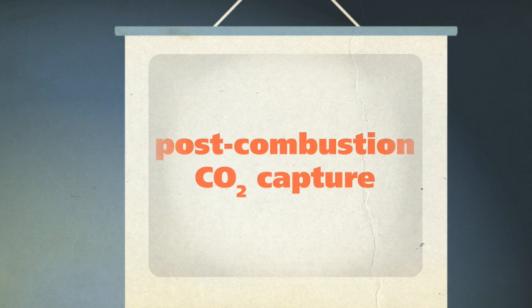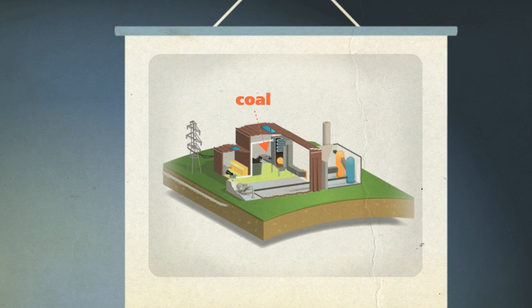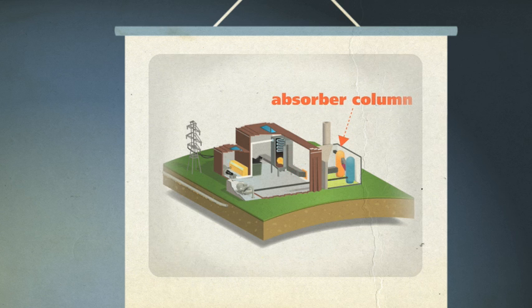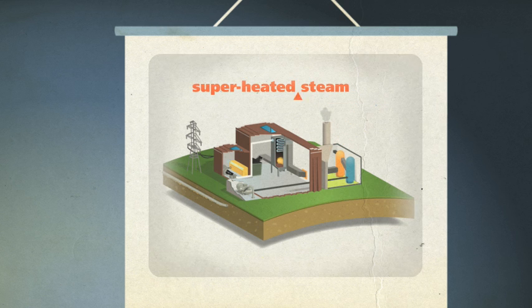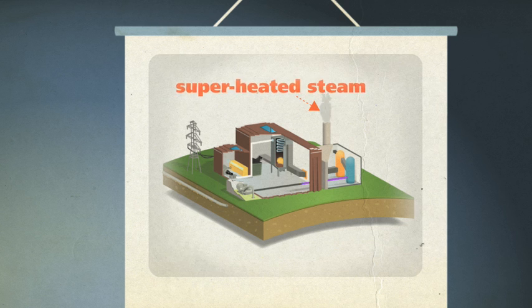In post-combustion capture, the fossil fuel is burned as normal. But before the flue gas travels up the chimney, it passes through an absorber column. This is filled with liquid solvents called amines, which absorb the CO2 before it can enter the atmosphere. Superheated steam is then passed through the chimney. This releases the CO2 from the amines, and it can now be safely captured.